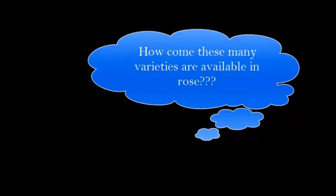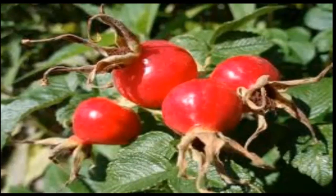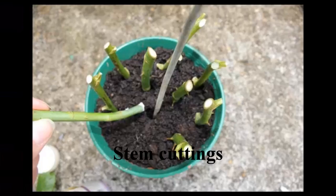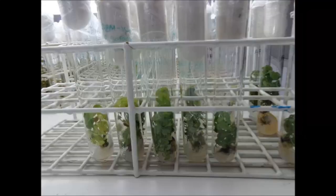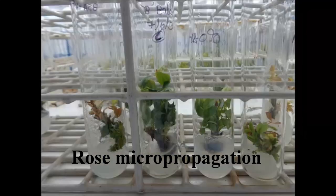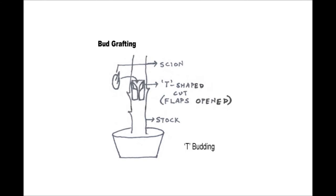The first propagation method is rose seeds, also called rose hips, but they are not produced in modern garden roses — only in wild roses. The second is rose stem cuttings. The third is the air layering technique. The fourth is the in vitro method of propagating in plant tissue culture labs.